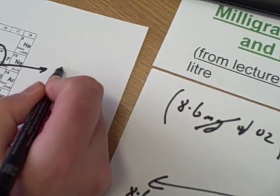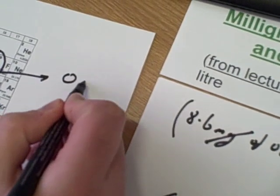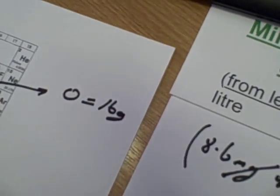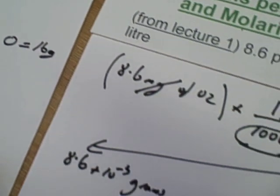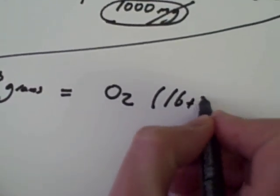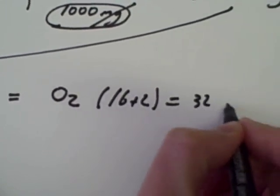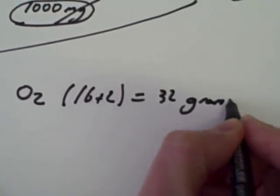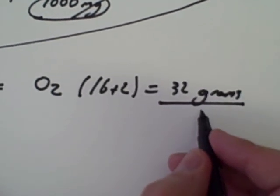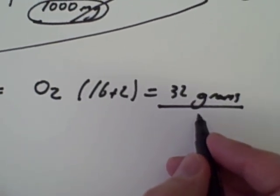Atomic number and atomic mass — and it's the atomic mass we need. For one atom of oxygen, it effectively weighs 16 grams. But of course we are dealing with molecular oxygen, so 16 times 2 is 32 grams. If I was to go into the laboratory, one mole of oxygen would weigh 32 grams.